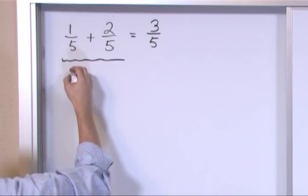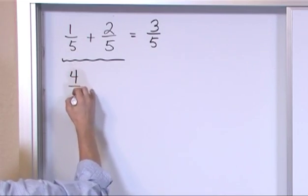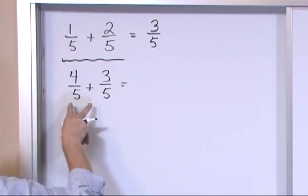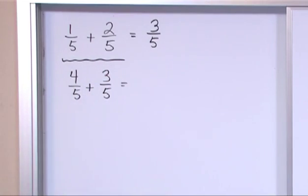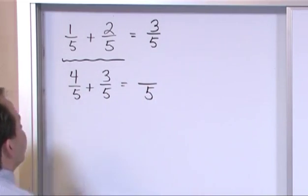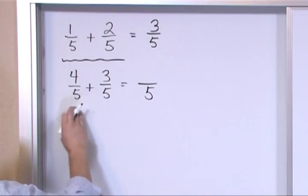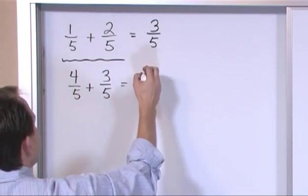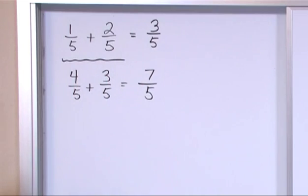Now what if we had four-fifths plus three-fifths? So again, we check to see are the denominators the same, and they are. So the denominator of our new fraction will be five. It'll stay the same. You don't add them or anything. You just keep the new denominator. And then you add this together. Four plus three is seven. So the answer is seven-fifths.